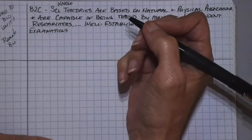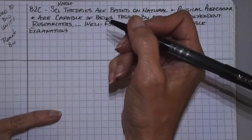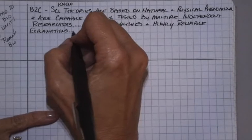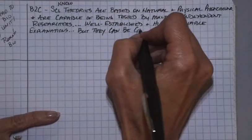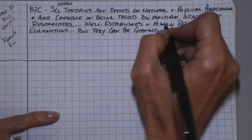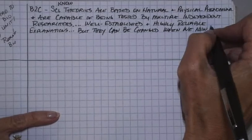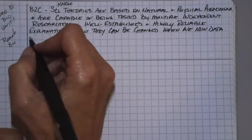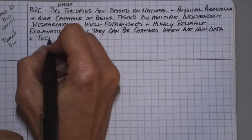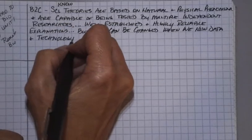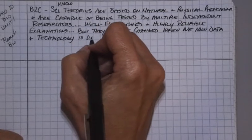But they can be changed when we have more data. Okay? They can be changed when we have new scientific technology. So they can be changed when we have new data and new technology. Sometimes we just don't have the technology to study things, and all of a sudden there's a breakthrough in technology and we can get a lot more information. So that's B2C.